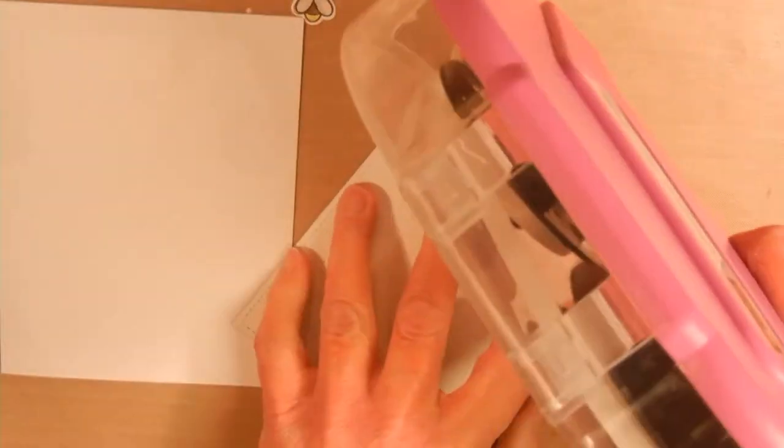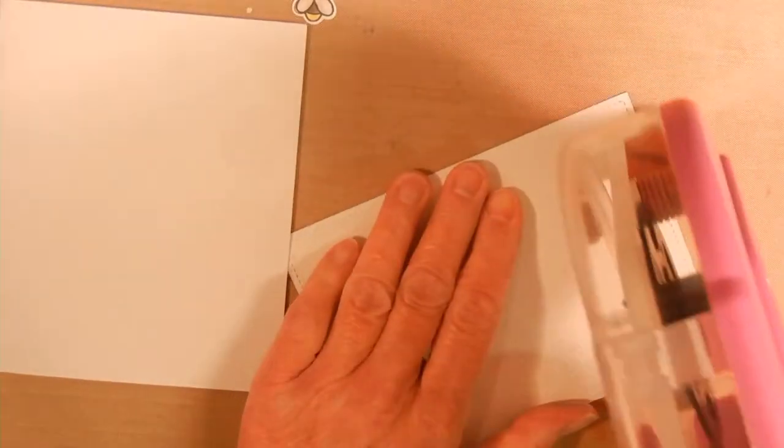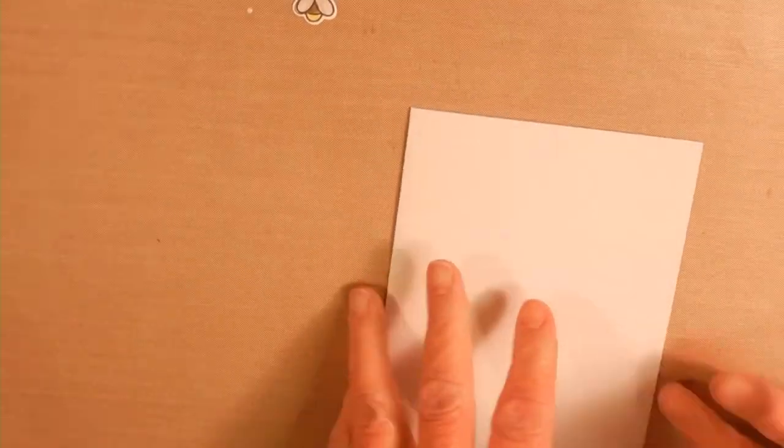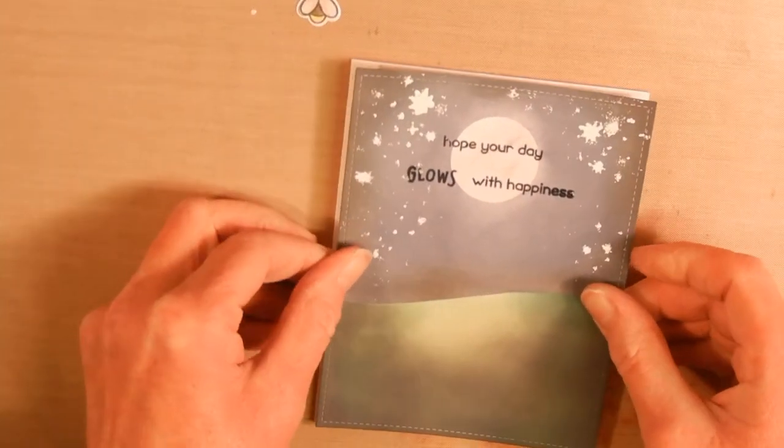Next I used my Scotch ATG gun to attach my card panel to my card base. You could also use liquid adhesive to do this.